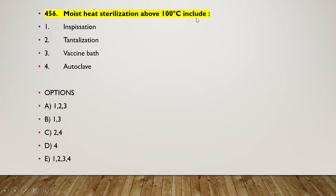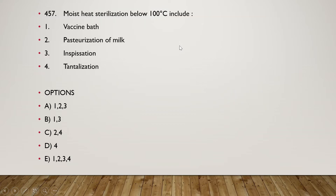The next question: moist heat sterilization above 100°C includes inspissation, tyndallization, water bath, or autoclave. The right answer is option D — four — autoclave is the right answer, which involves moist heat sterilization above 100°C.